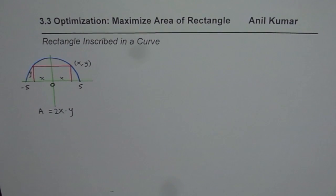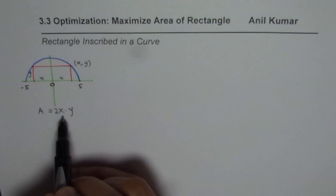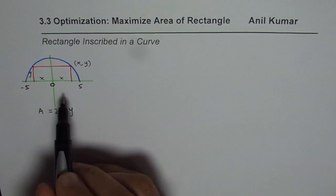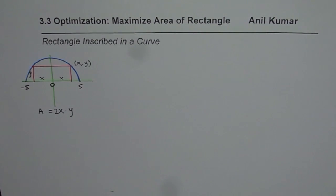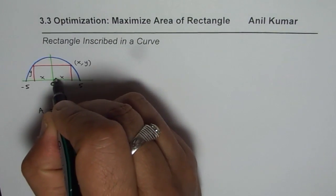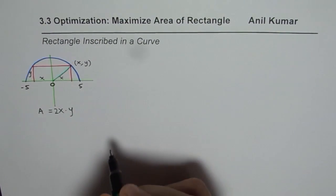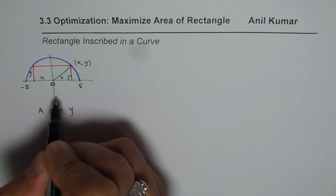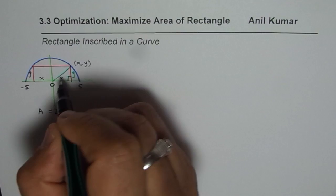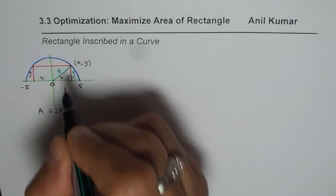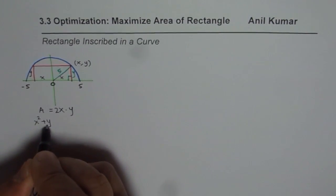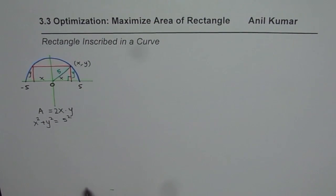Now whenever you are solving maximizing and minimizing problems, you need to relate one variable in terms of the other. How will you relate x and y? We can consider the diagonal — connecting the point (x, y) to the origin. This forms a right triangle where the base is x and the height is y. So x and y are related to the hypotenuse by the Pythagorean theorem. We can say x² + y² = 5² = 25.